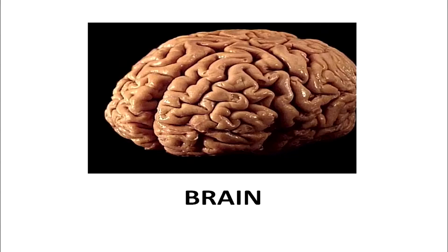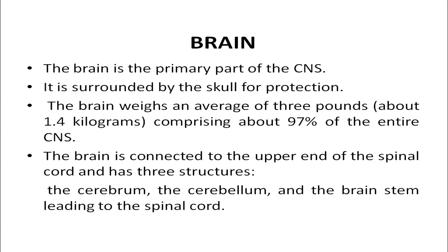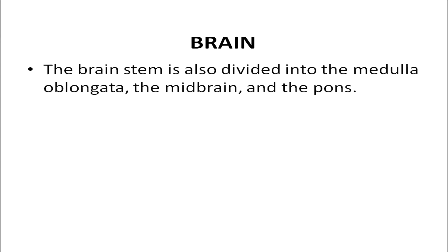The brain is the primary part of the central nervous system, surrounded by the skull for protection. The brain weighs on average 3 pounds, that is about 1.4 kilograms, comprising about 97% of the entire central nervous system. The brain is connected to the upper end of the spinal cord and has three structures: the cerebrum, the cerebellum, and the brain stem leading to the spinal cord. The brain stem is further divided into the medulla oblongata, the midbrain, and the pons.